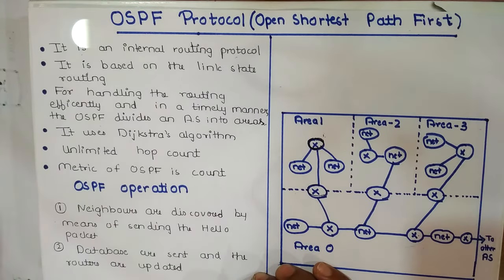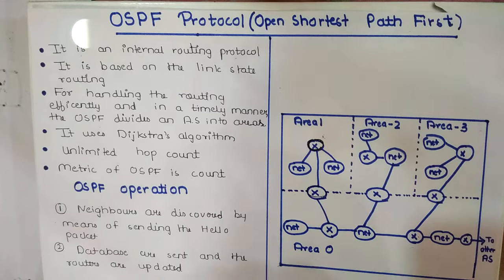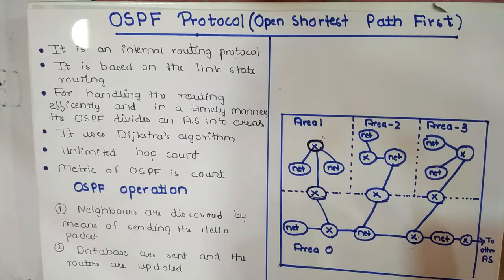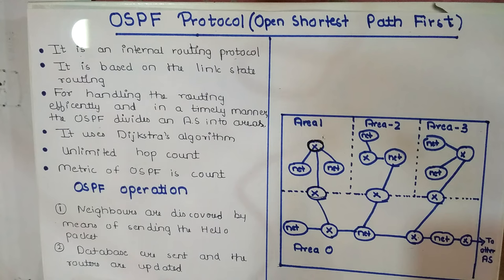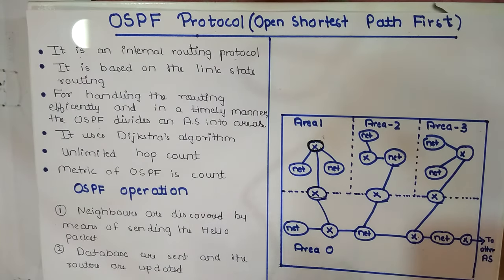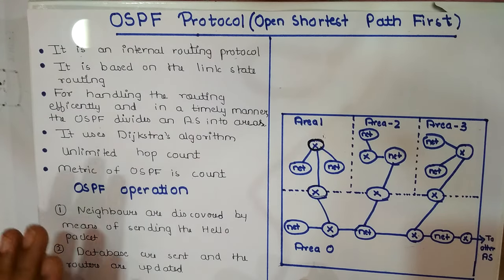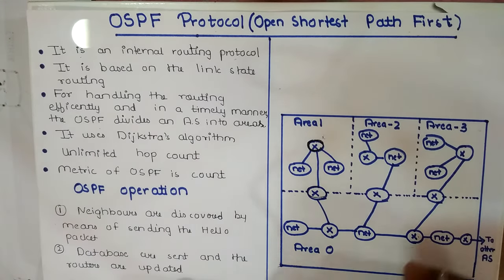The database contains information such as cost. After the database is shared between all the neighbors, all the routers in an autonomous system know about all other routers' information. Using this information, the router finds the best route and the shortest path to reach the destination.